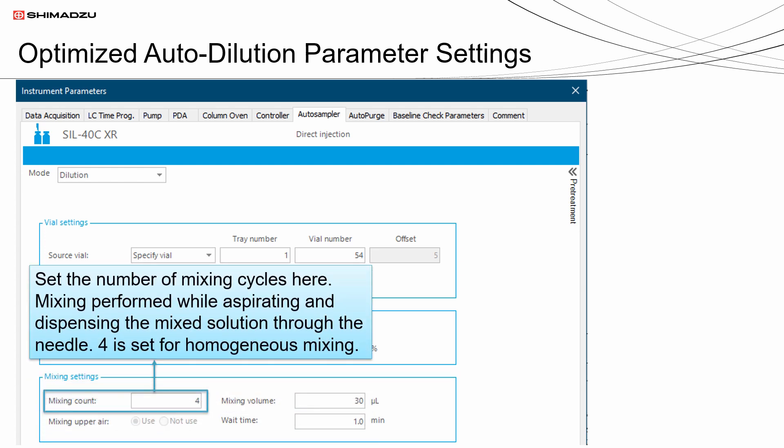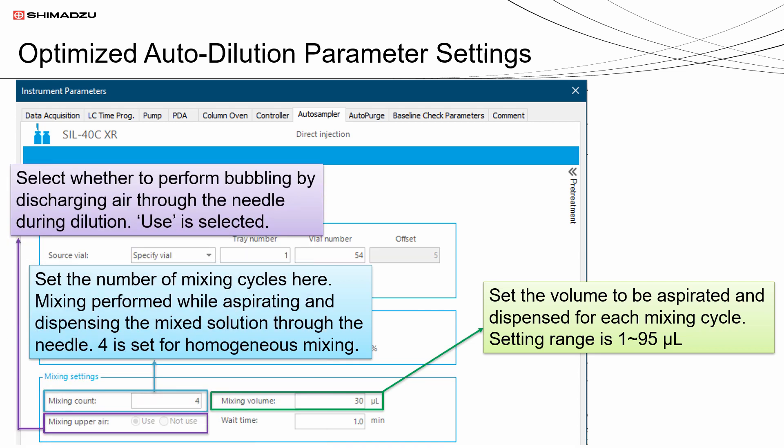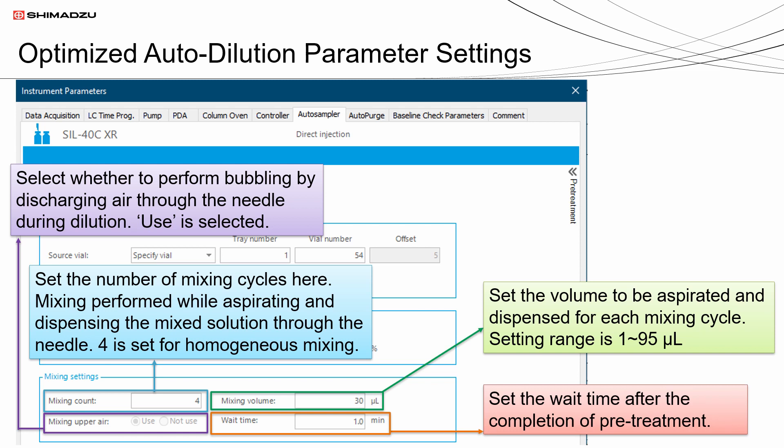Set the number of mixing cycles. Here, mixing is performed while aspirating and dispensing the mixed solution through the needle. Four is set for homogeneous mixing. Set the volume to be aspirated and dispensed for each mixing cycle. Setting range is 1 to 95 microliters. Select whether to perform bubbling by discharging air through the needle during dilution. Set the wait time after the completion of pre-treatment.